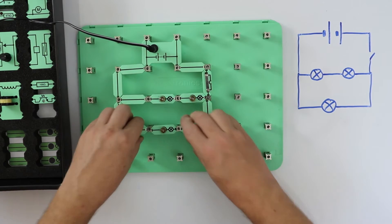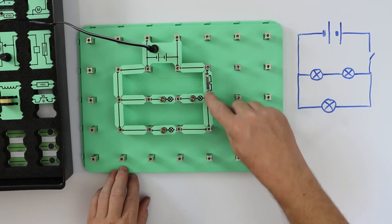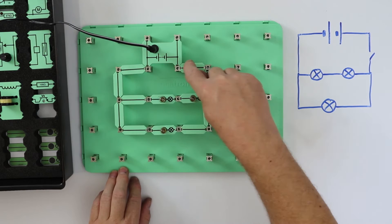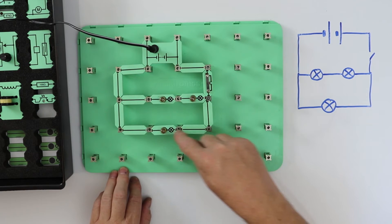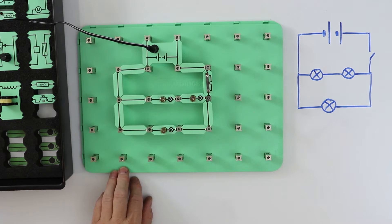The electricity can either flow this way around the circuit, or it can flow this way around the circuit. This is known as a parallel circuit.